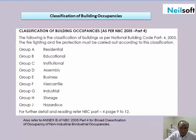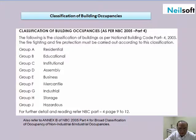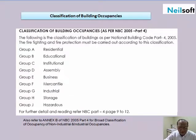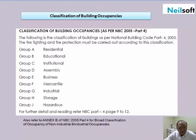Group E is business, Group F is mercantile, Group G, Group H is storage, and Group J is hazardous. These are further classified as per area, exercise, and heights etc. More details are available in NBC 2005 Part 4, which shows the broad classification of occupancy of non-industrial and industrial occupancies.